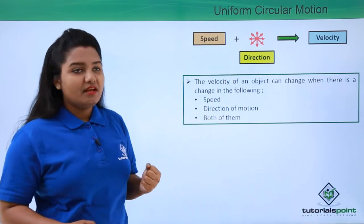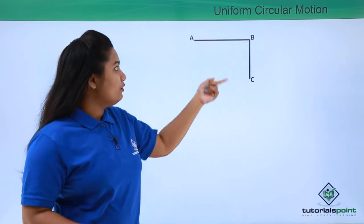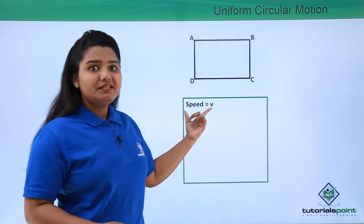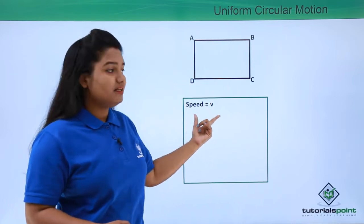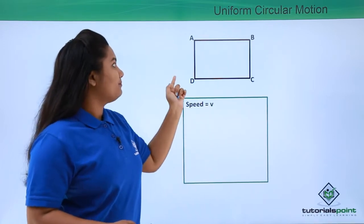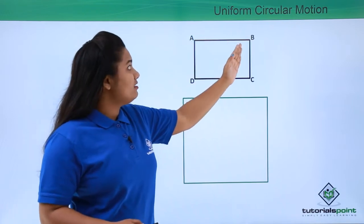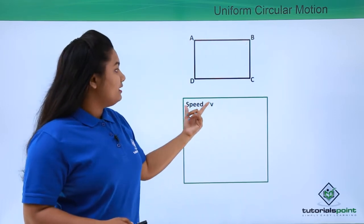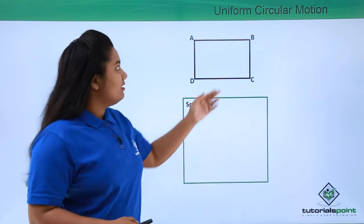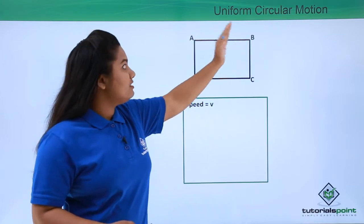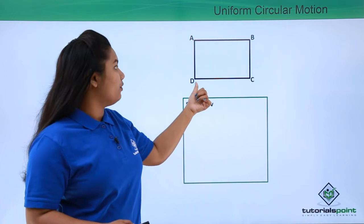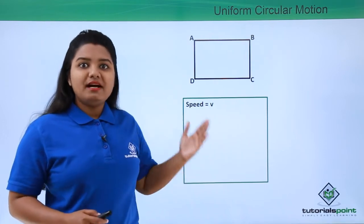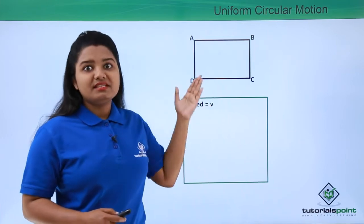Now let's say a body is moving in a rectangular path A B C D and back to A. Here the body is moving with a constant speed — the magnitude of velocity is constant, which I have taken as v throughout the path. But there has been a change in velocity due to the change in direction. At point B, the speed was still v, but the direction changed. The same happens at point C and point D.